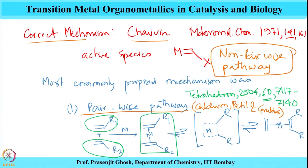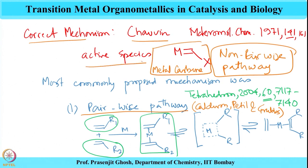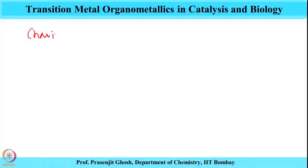This non-pairwise pathway was an outcome of a metal carbene complex species being the active species of this reaction. This shows how radical Chauvin's proposal of a non-pairwise pathway was. This mechanism was later known as the carbene mechanism. Chauvin's non-pairwise mechanism is also popularly called the carbene mechanism.